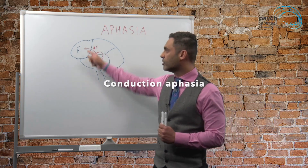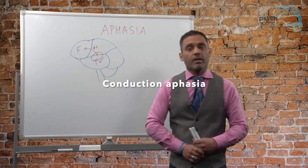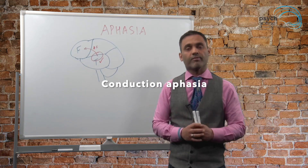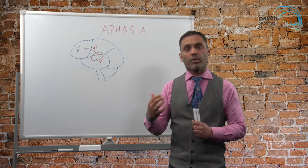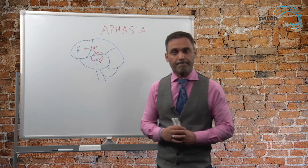Conduction aphasia is often due to the arcuate fasciculus — the conduction pathway — being affected.